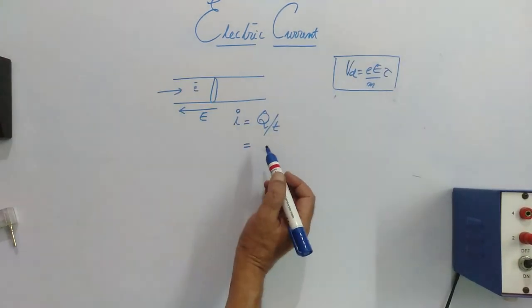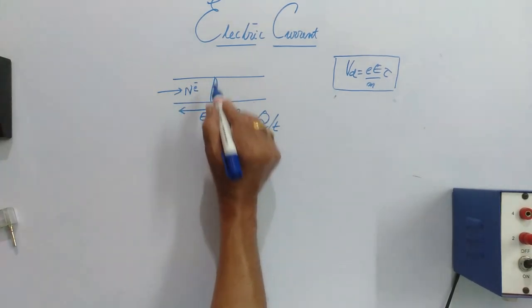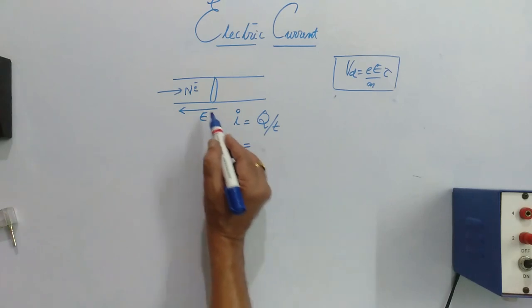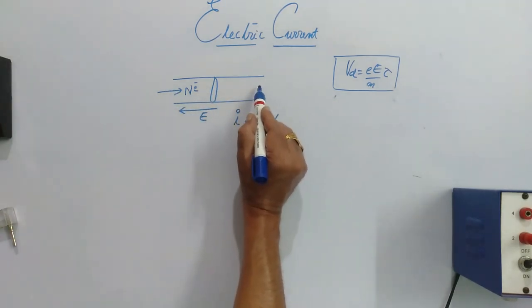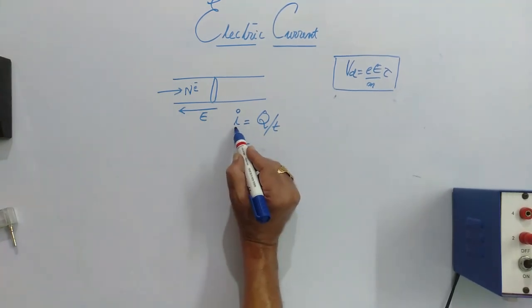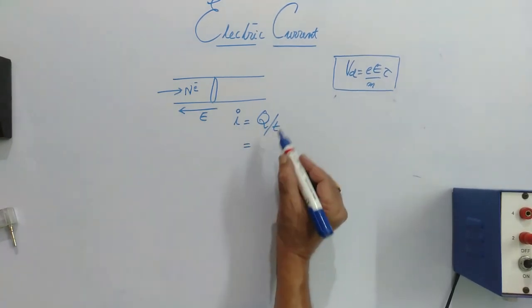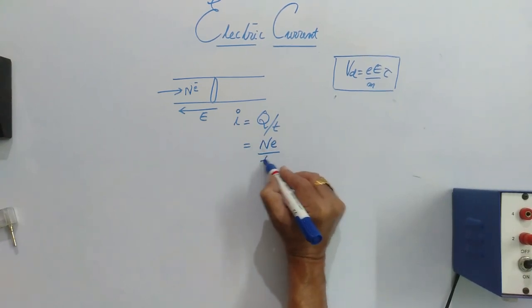Let's consider that N electrons are passing through this area. When I am supposing that electrons are moving in this direction, I must take electric field in the opposite direction. So, I is equal to Q by T. So I can write the net charge as, since Q is equal to NE.